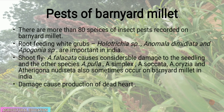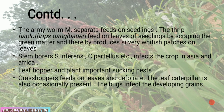There are more than 80 species of insect pests recorded on barnyard millet. Root-feeding white grubs (Holotrichia spp., Anomala spp., Apogonia spp.) are important in India. Shoot fly (Atherigona spp.) causes considerable damage to seedlings, producing dead hearts. Army worm feeds on seedlings; thrips feed on leaves by scraping green matter, producing silvery whitish patches. Stem borer infects crops in Asia and Africa. Leafhoppers and plant hoppers are important sucking pests. Grasshoppers defoliate leaves; leaf caterpillar is also occasionally present. Bugs infect developing grains.